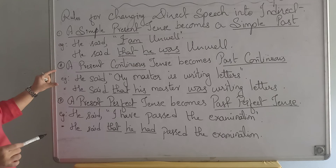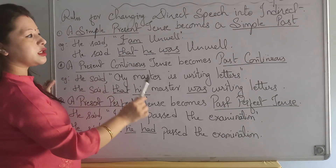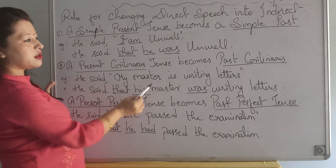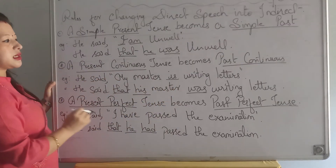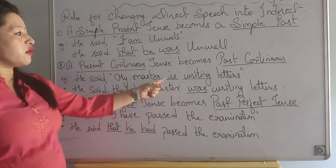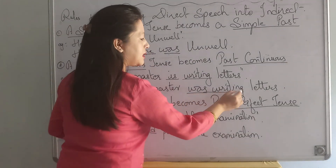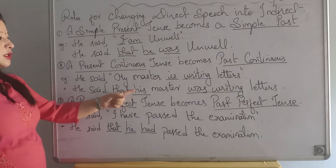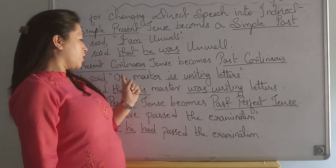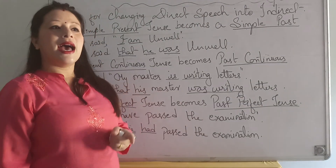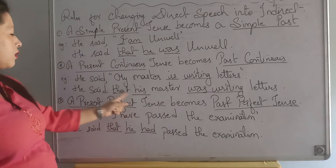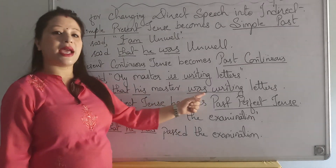The next rule is present continuous tense — it changes into past continuous tense. For example, he said, 'My master is writing a letter.' Here 'is writing' is present continuous. When you change this into past continuous, instead of 'is writing' you write 'was writing.' Also remember, pronouns always change when you convert direct speech into indirect. For example, 'my' or 'I' changes to 'his' or 'he.' So the indirect form becomes: he said that his master was writing a letter.